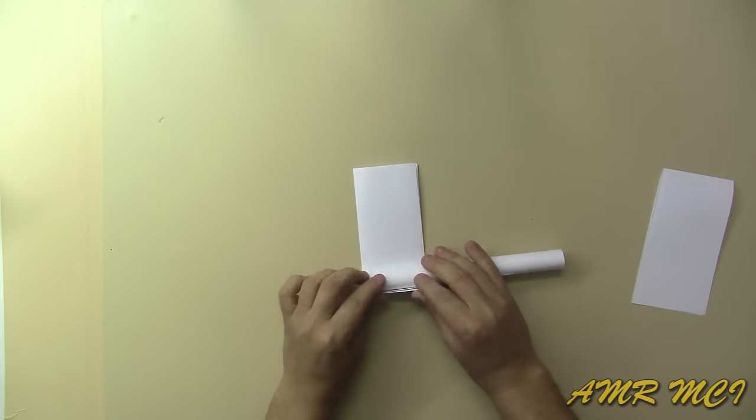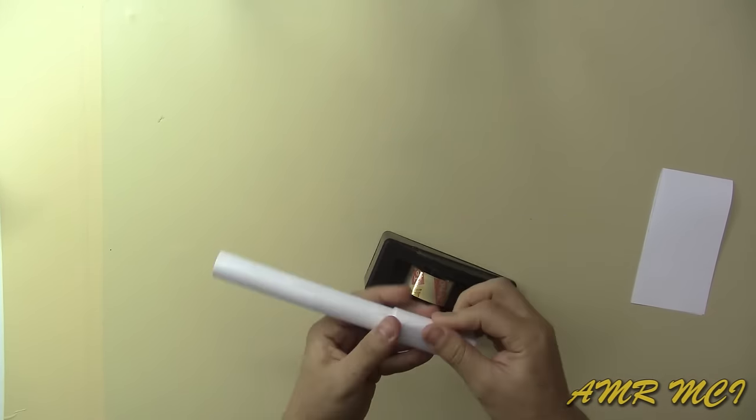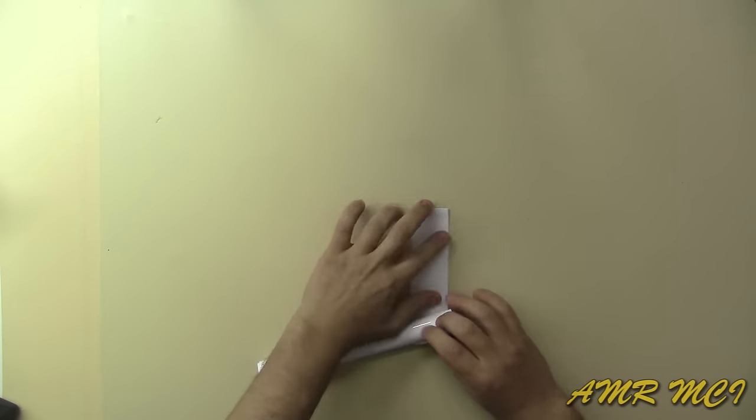Fold the biggest one in half, then take the remaining piece of roll and roll the paper at the edge. Fix the roll with some tape, then take the other piece and repeat the same steps you did for the first one.